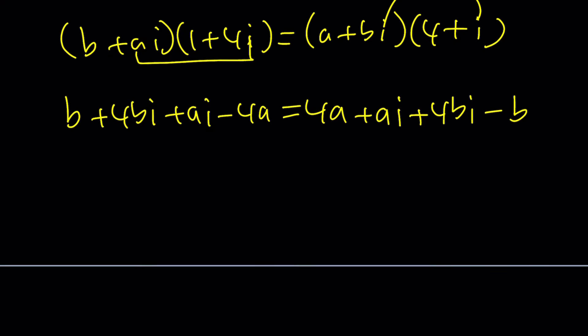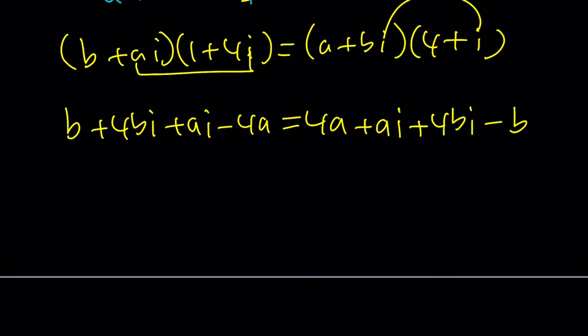Well let's see if you can combine like terms or simplify something. Notice here that A I cancels out and 4 B I canceled out. Great. Now this gives us something interesting. B minus 4 A equals 4 A minus B. Kind of like X minus Y equals Y minus X. But they're opposites.